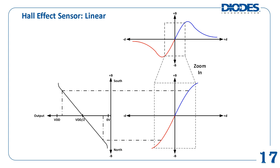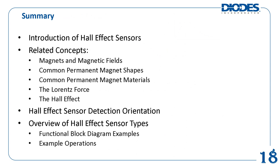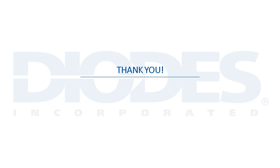Here is a brief summary review of this module. It described what a Hall Effect sensor is with a few example use cases. It also introduced several related concepts such as magnets and magnetic fields, common permanent magnet shapes and materials, the Lorentz force, and the Hall Effect itself. It introduced the common Hall Effect sensor detection orientation convention, where detecting a south pole denotes a positive magnetic flux density and detecting a north pole denotes a negative magnetic flux density. Lastly, it explained the main types of Hall Effect sensors, showed simplified functional block diagrams of their design, and provided an example operation of each type. Diodes Incorporated kindly thanks you for viewing this product training module entitled Hall Effect Sensors Introduction.